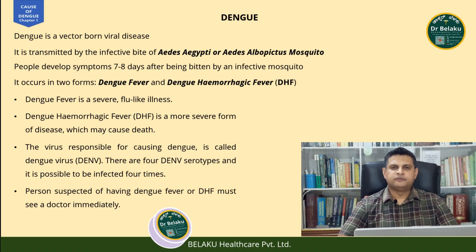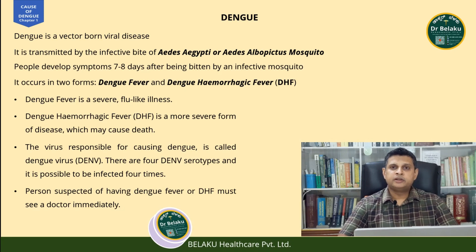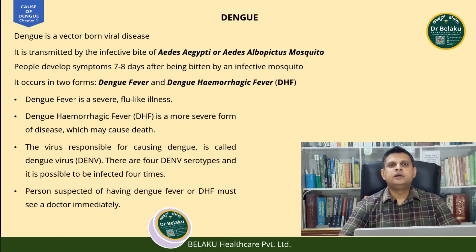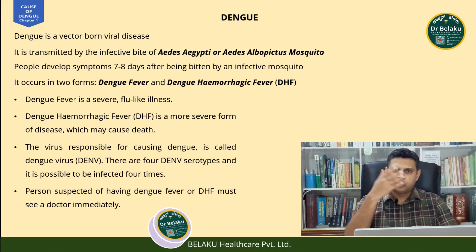Dengue fever is more like a flu-like illness or a severe form of flu. Dengue hemorrhagic fever is the severe form of dengue where it can lead to death if it is not treated well or if the person does not seek medical advice in time. The virus that causes dengue fever is known as dengue virus or DENV. There are four serotypes — four variants of this virus. So if a person is infected with dengue virus once, it does not mean they may not get re-infected with the other three variants again.